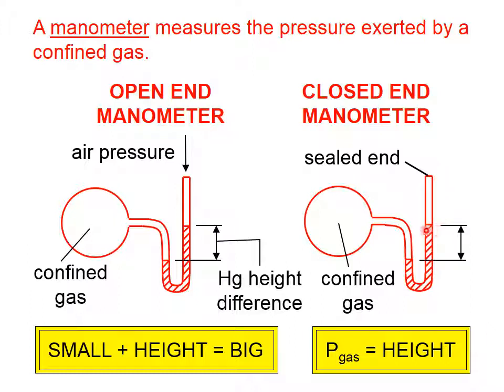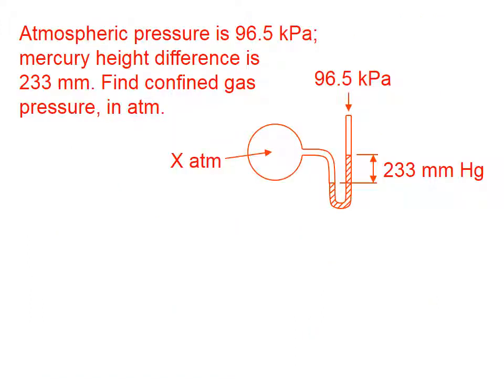Closed-end manometers are much simpler, because we have a vacuum at the top of this stem where the sealed end is. The pressure of the gas in the manometer is simply equal to the height of that liquid column.